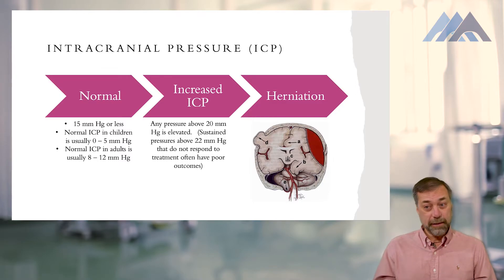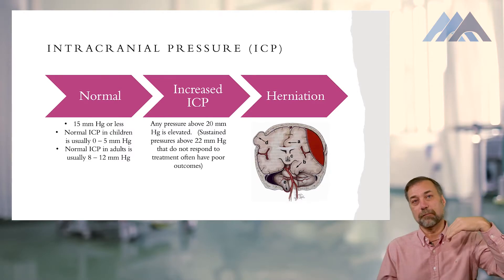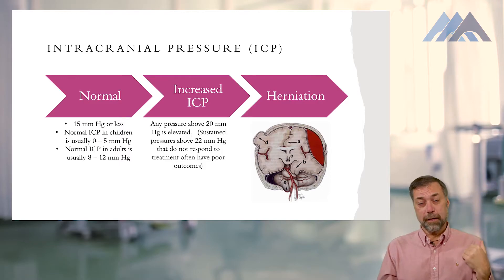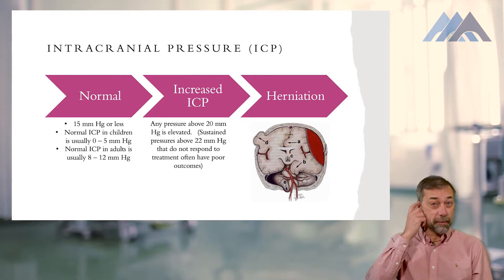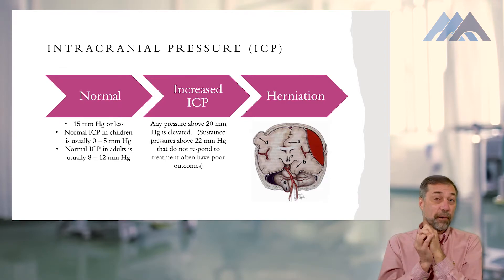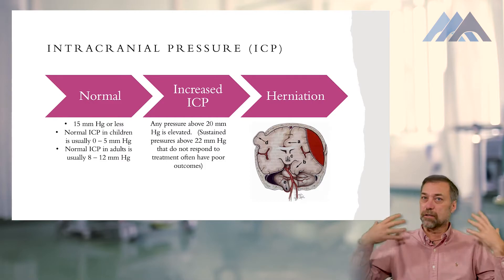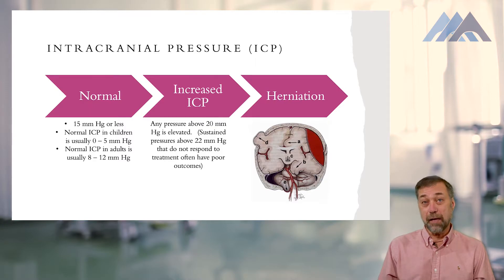We don't really consider intracranial pressure elevated until it exceeds 20 mmHg. Once it gets above 20, we worry about it. When it starts to get even higher, the pressure begins to compress the blood vessels of the brain, leading to decreased oxygen delivery, decreased glucose delivery, and that leads to secondary cellular death.